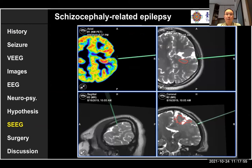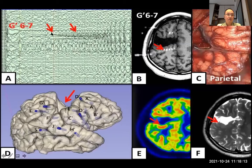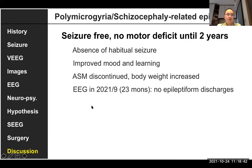We localized the target and tried to remove just this part because the SEEG spike was very limited. After surgery, we resected only this small area and confirmed the patient's motor function was preserved. The SEEG showed a very limited, focal seizure onset zone at G6 and G7. Based on PET showing hypermetabolism, we entered directly into this epileptogenic focus within the schizencephaly and resected it. Until now — two years — the patient has had absence of habitual seizures, improved mood and learning, stopped antiseizure medications, body weight increased, and EEG shows no epileptiform discharge at 27 months.